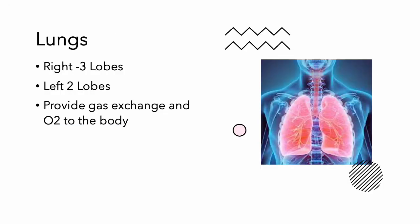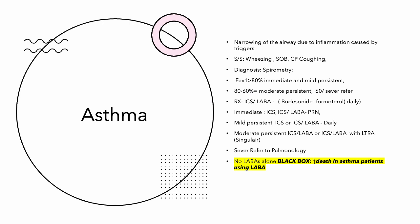Quick anatomy of the lungs: the right side of the lungs has three lobes, and the left side has two lobes. Gas exchange occurs there — this is where oxygen and carbon dioxide exchange is done for the entire body. So this is quite an important organ. Let's jump right in and get started with asthma.